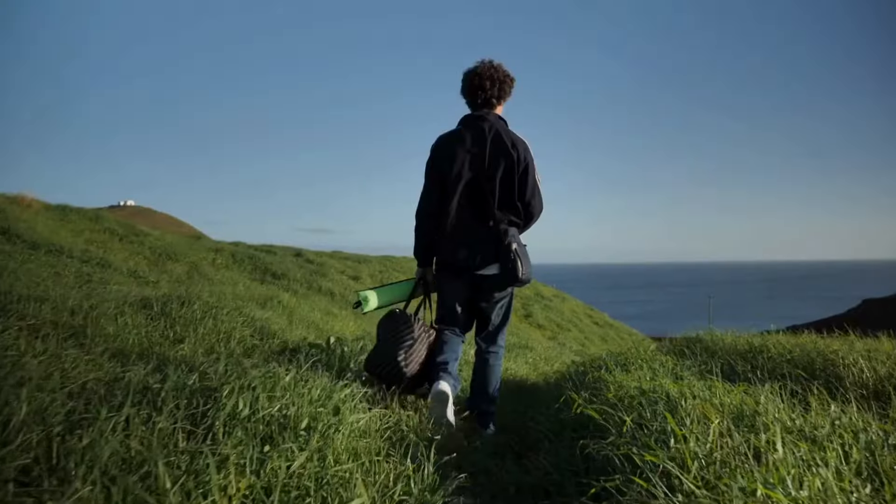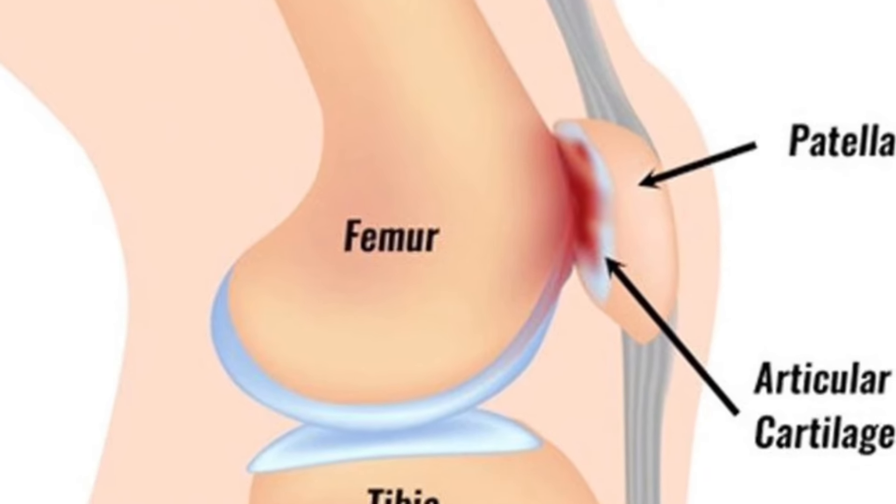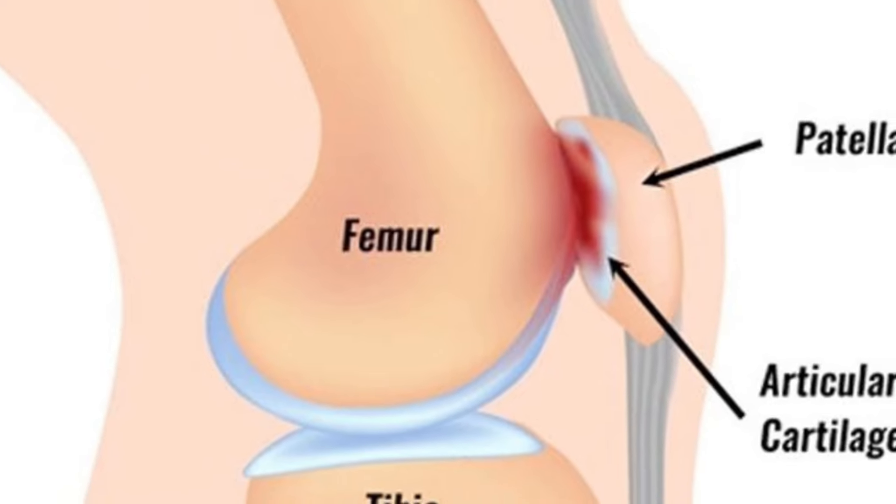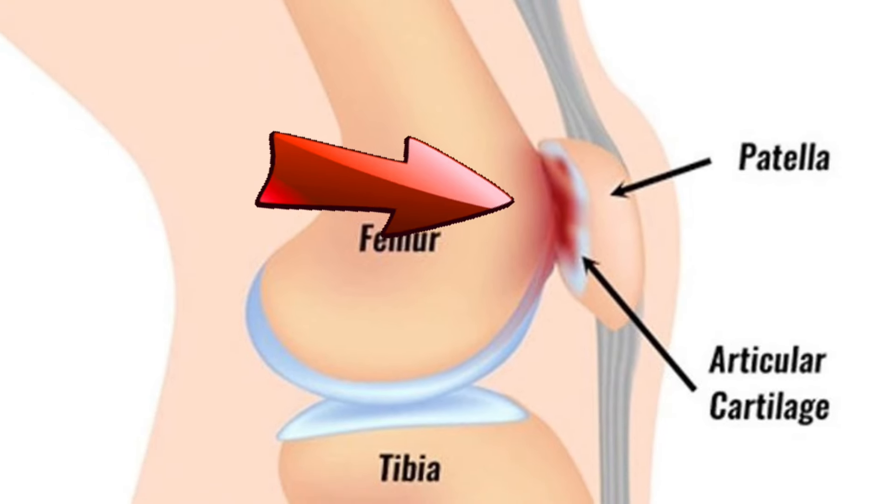The first condition we're going to talk about is the most common. It's a condition called patellofemoral joint pain, also known as runner's knee. It fits under the umbrella of a condition called chondromalacia patella and it essentially affects the underside of your kneecap. We get irritation on the undersurface of the kneecap between the cartilage or the chondral surfaces of the underside of the kneecap and of the thigh bone.